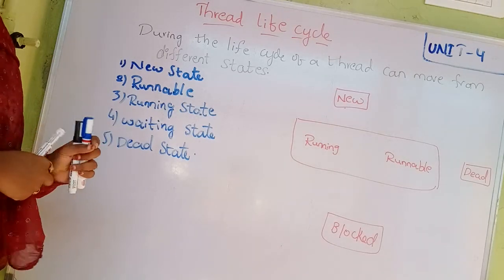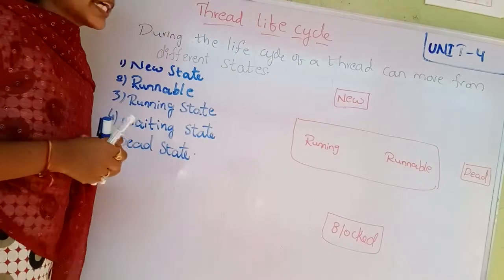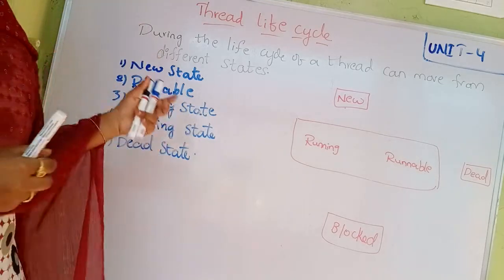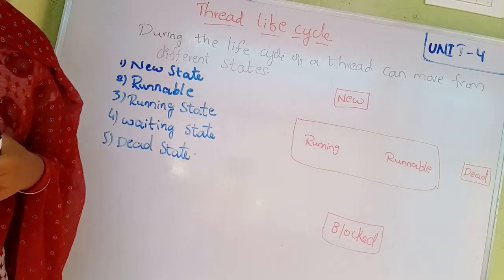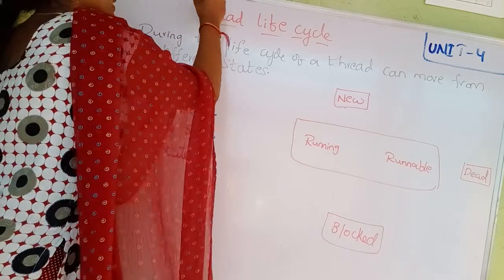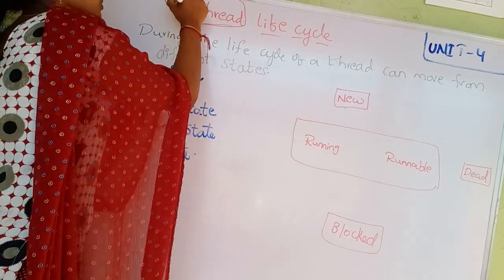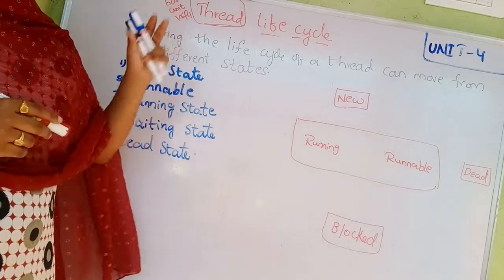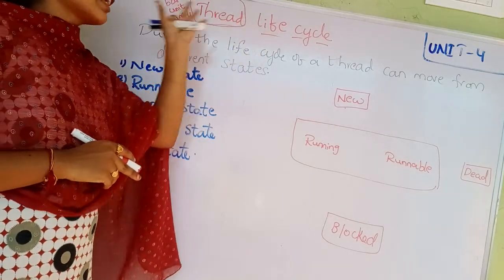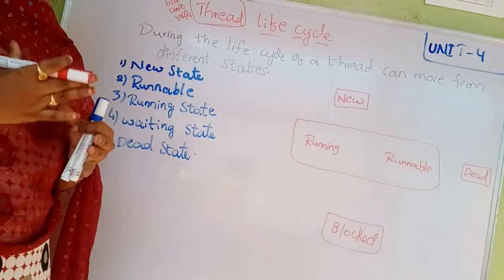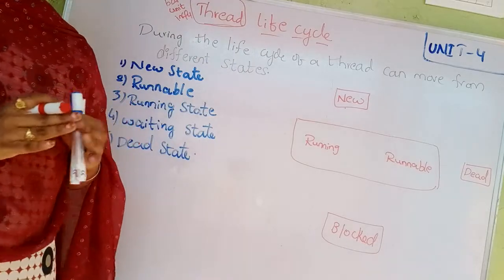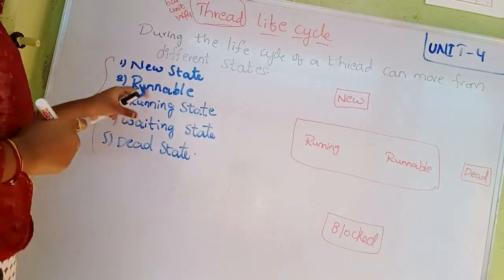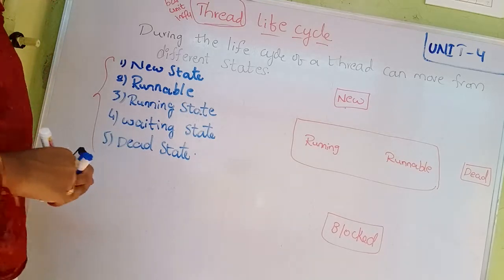Next topic: Thread Life Cycle. During the life cycle of a thread, it can move through different states. A thread is a basic unit in the CPU that will independently execute. The different states in the thread life cycle are: new state, runnable state, running state, waiting state, and dead state.